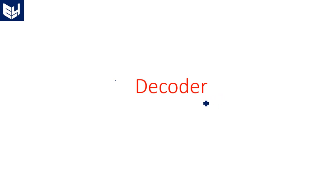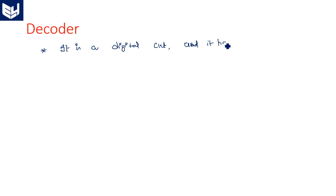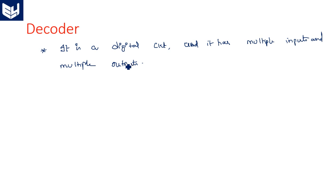In this video I am going to explain about the decoder. A decoder is a digital circuit having multiple inputs and multiple outputs.